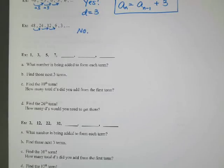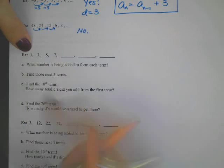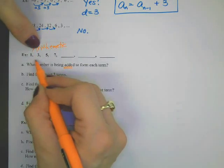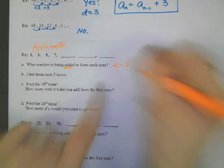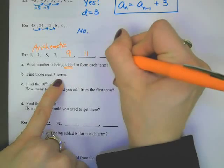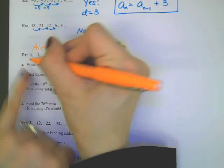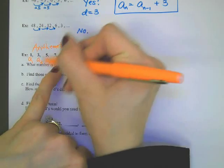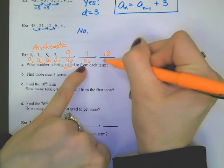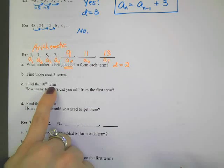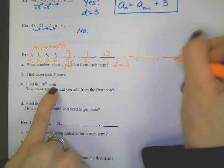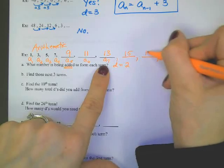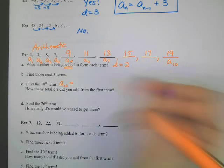Let's take a look at this arithmetic sequence. They give you a bunch of numbers — can you tell what number is being added? 1 plus 2, 3 plus 2, 5 plus 2 — so D must be 2. Let's find the next three terms: 9, 11, and 13. This is the first term — I'll label this a sub 1, a sub 2, a sub 3, a sub 4. After you make a sequence, it's a good idea to label them: a sub 5, a sub 6, a sub 7. Find the 10th term: this is the 7th one, so 8, 9, 10. Adding two more makes 15, 17, 19. The 10th term, a sub 10, is 19.